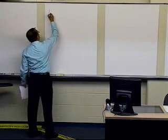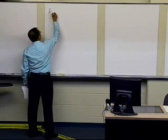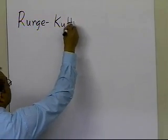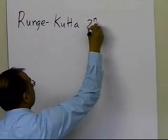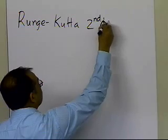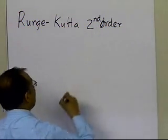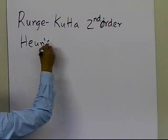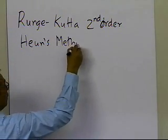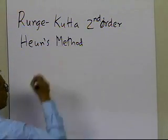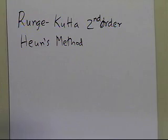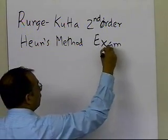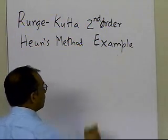We're going to take the Runge-Kutta second-order method of solving ordinary differential equations. I'm going to take an example of how to solve a problem using Runge-Kutta second-order method. We're going to use Heun's method as an example. There are two other methods — Ralston's method and the midpoint method — but once you understand one of the methods, the others are very easy to apply.